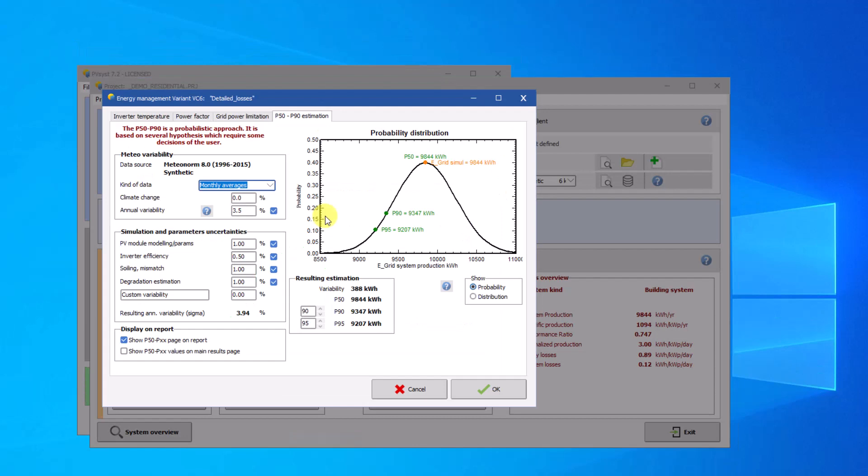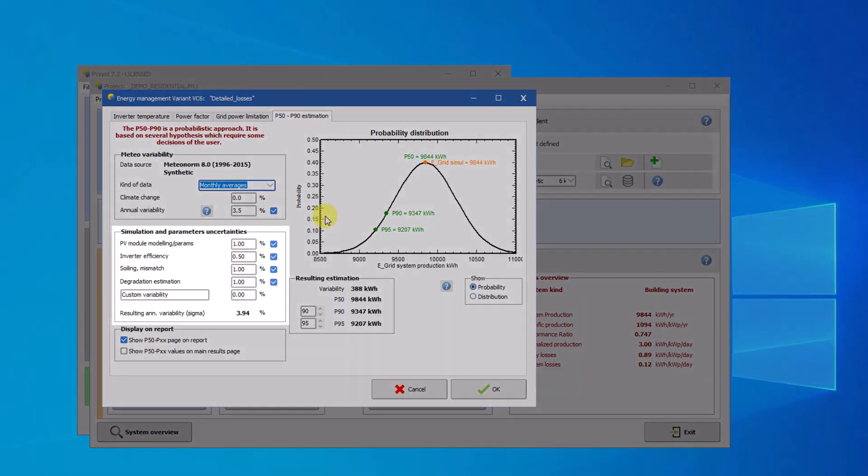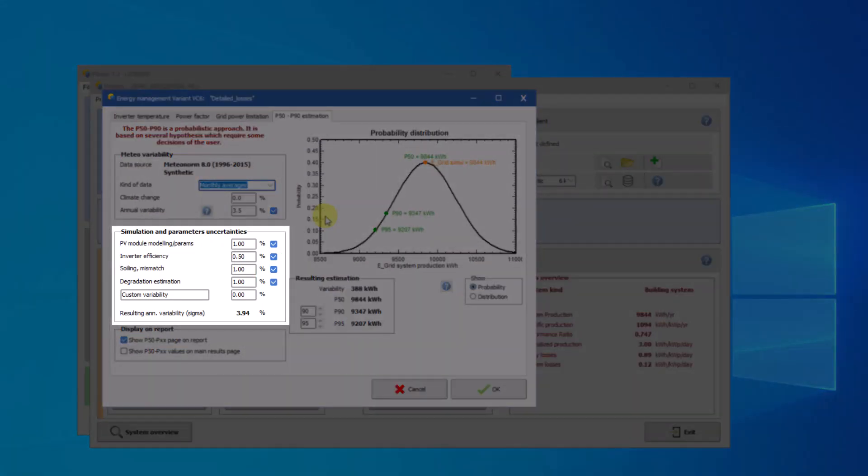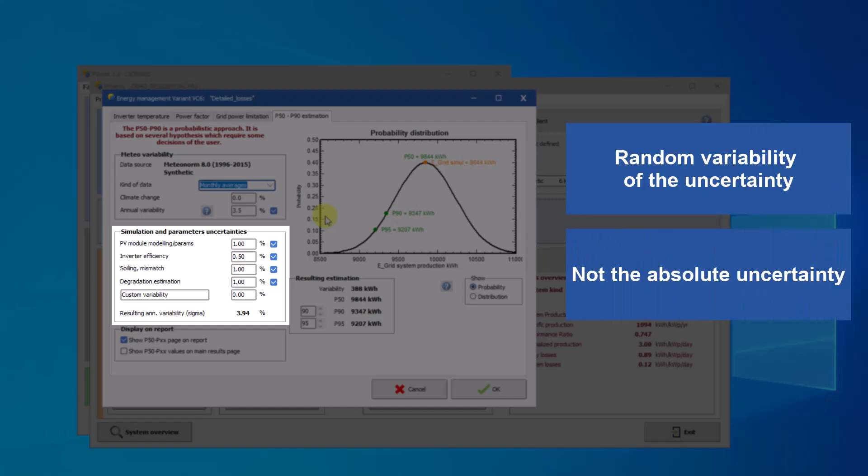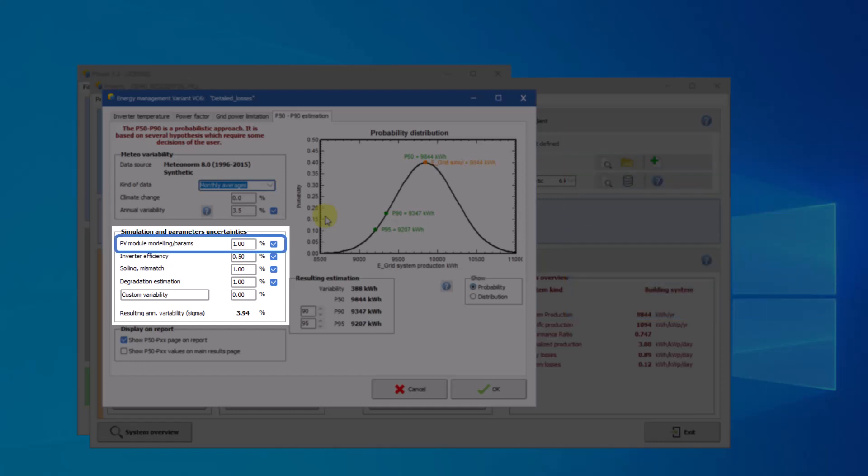Additional uncertainties in the simulation process could eventually be taken into account. These deviations should represent random variability of the uncertainty from year to year, not the absolute uncertainty. PV modules model and parameters, the main uncertainty after Meteo. Inverter efficiency, negligible.